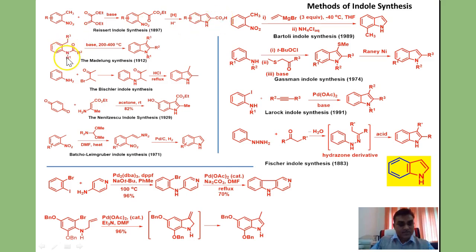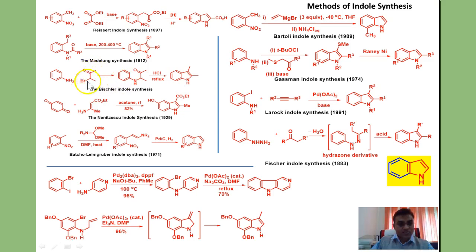In the Madelung synthesis we start with ortho-alkyl anilides, which under high temperature and strong basic conditions form indole. In Baeyer-Villiger indole synthesis, we start with an alpha-haloketone and aniline to get an alpha-arylamino ketone, which undergoes Friedel-Crafts type cyclization to form the indole.